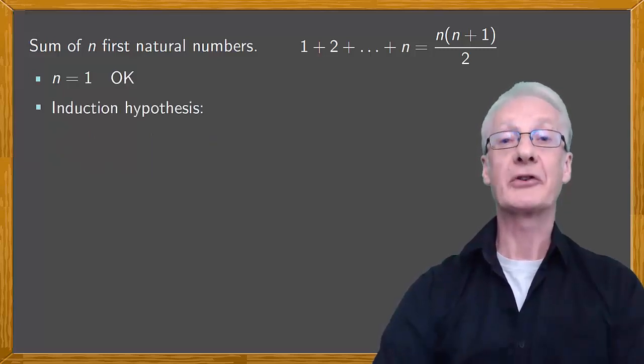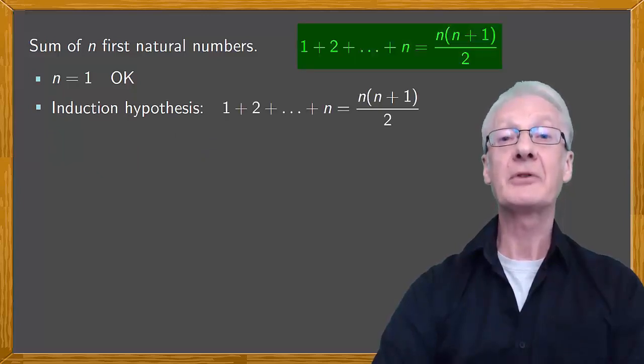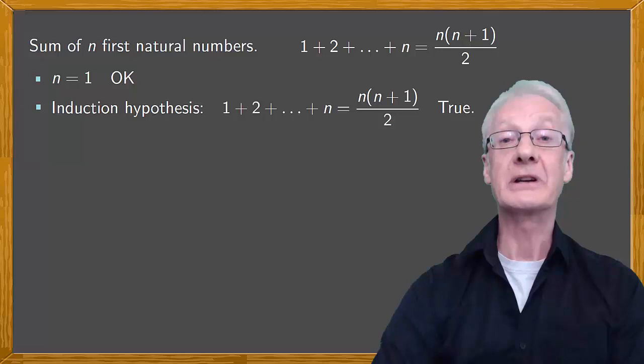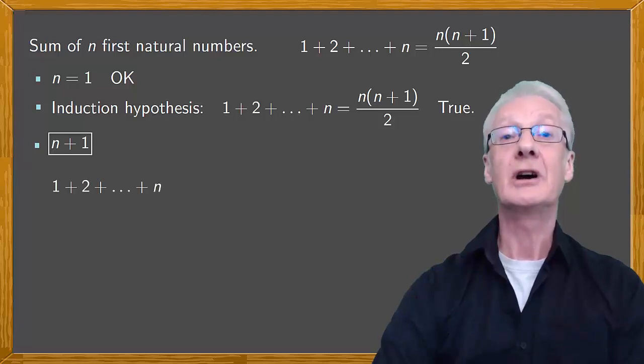Using the induction hypothesis, we assume that the property is true for n. In other words, we assume that the sum of the first n natural numbers is n times n plus 1 over 2. Now, we need to show that the property is true for n plus 1. The sum of the first n natural numbers is 1 plus 2 and so on, up to n plus 1.